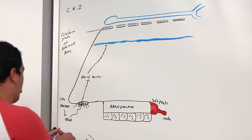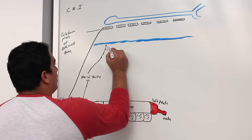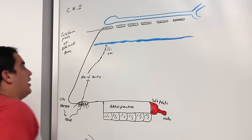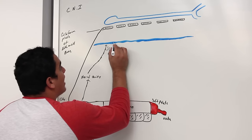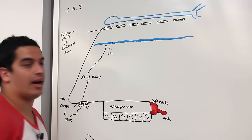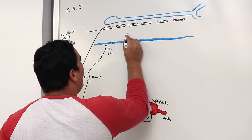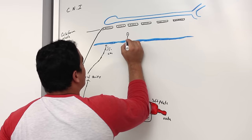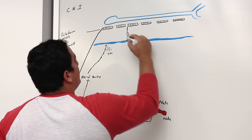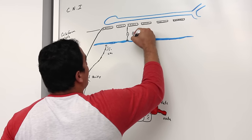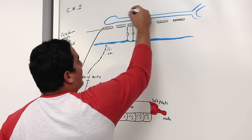This odor particle — let's say this little dot represents the methane gas from that fart — is going to dissolve into this actual mucus layer. Why is that important? Because right here you have these special bipolar neurons. These bipolar neurons have one dendrite extension and one axon extension.